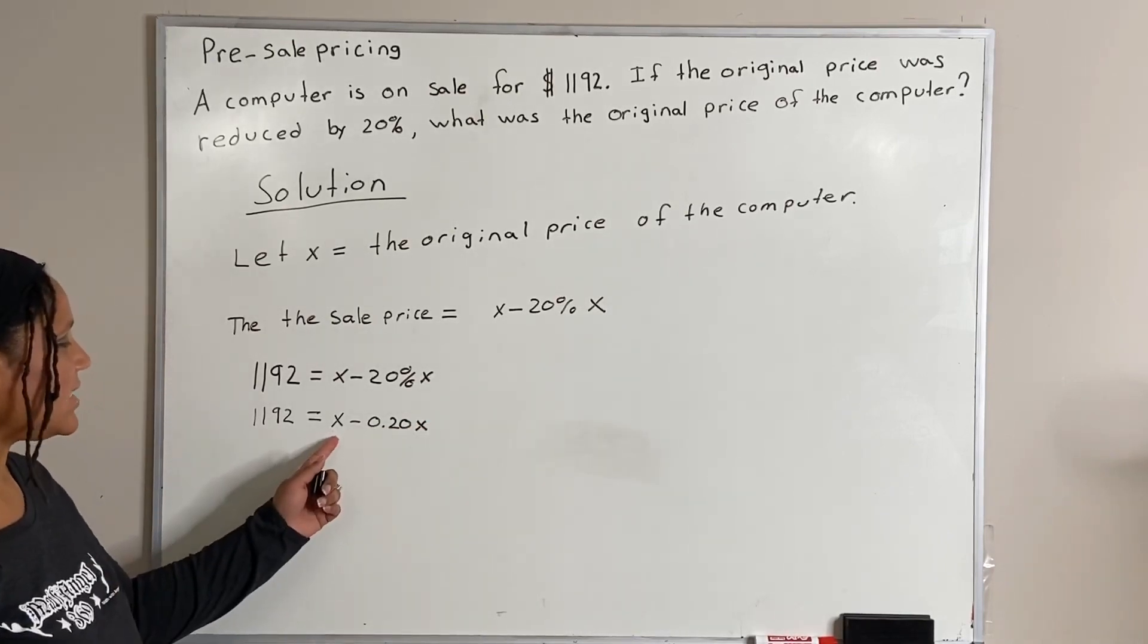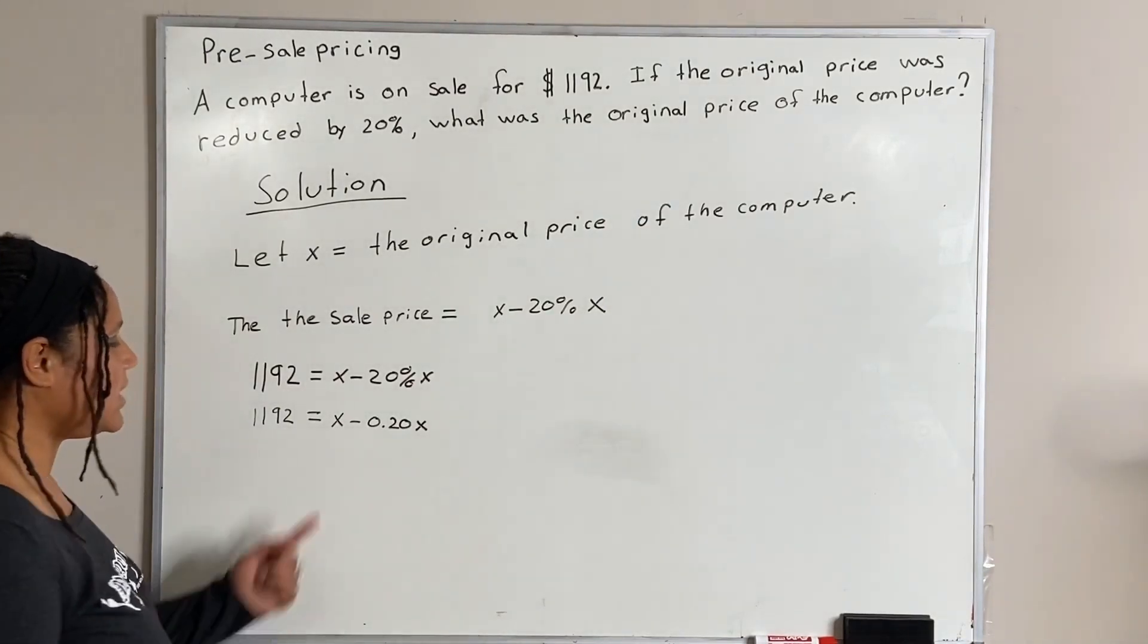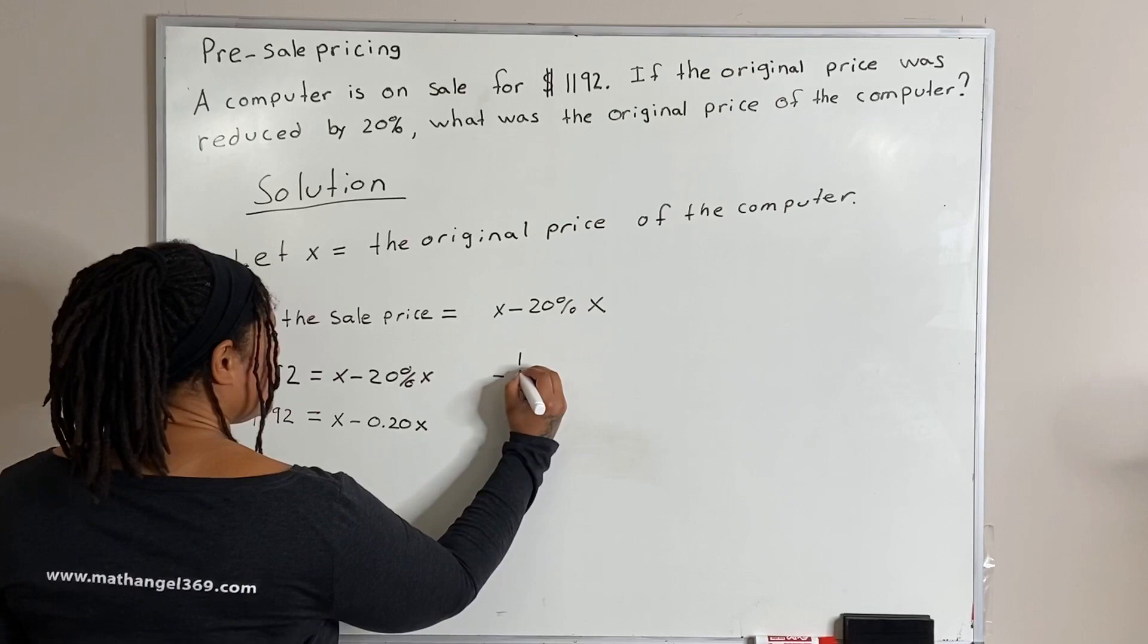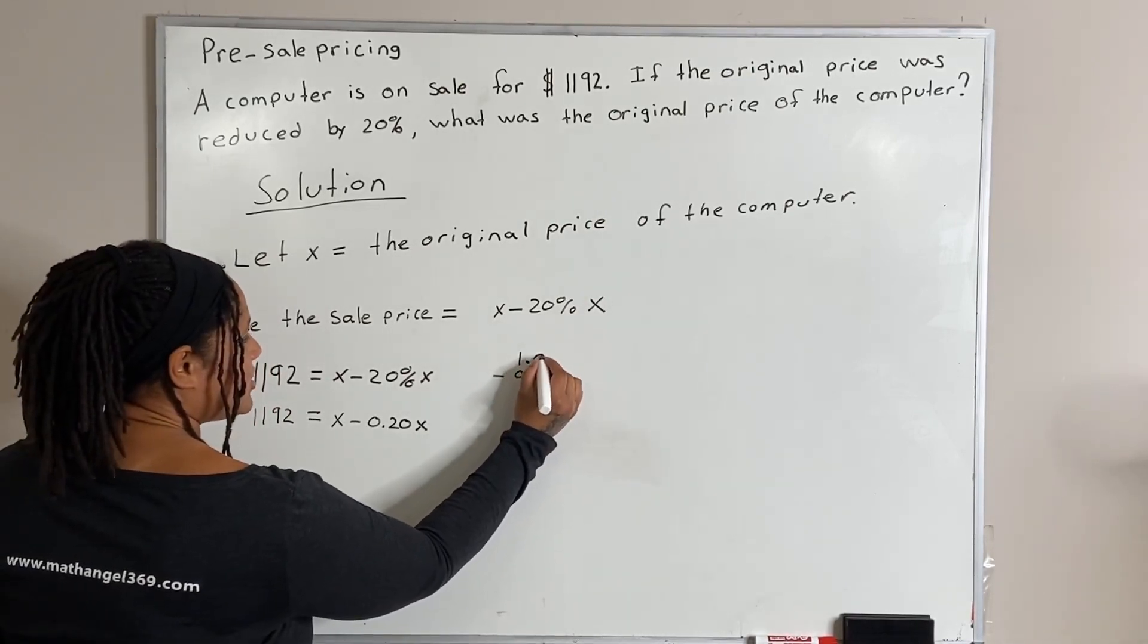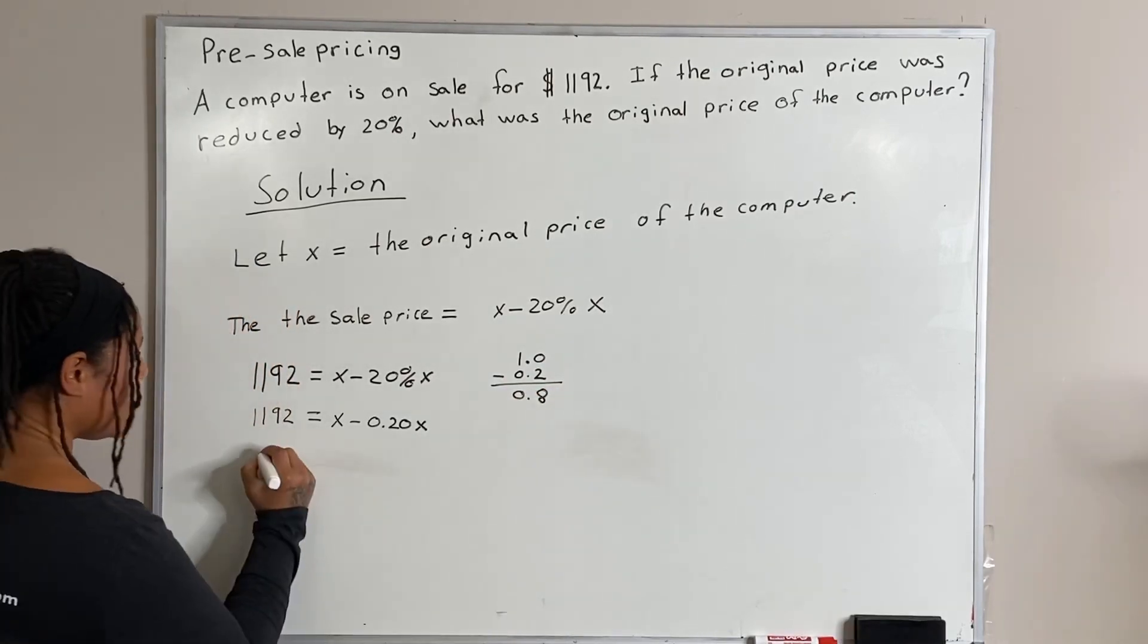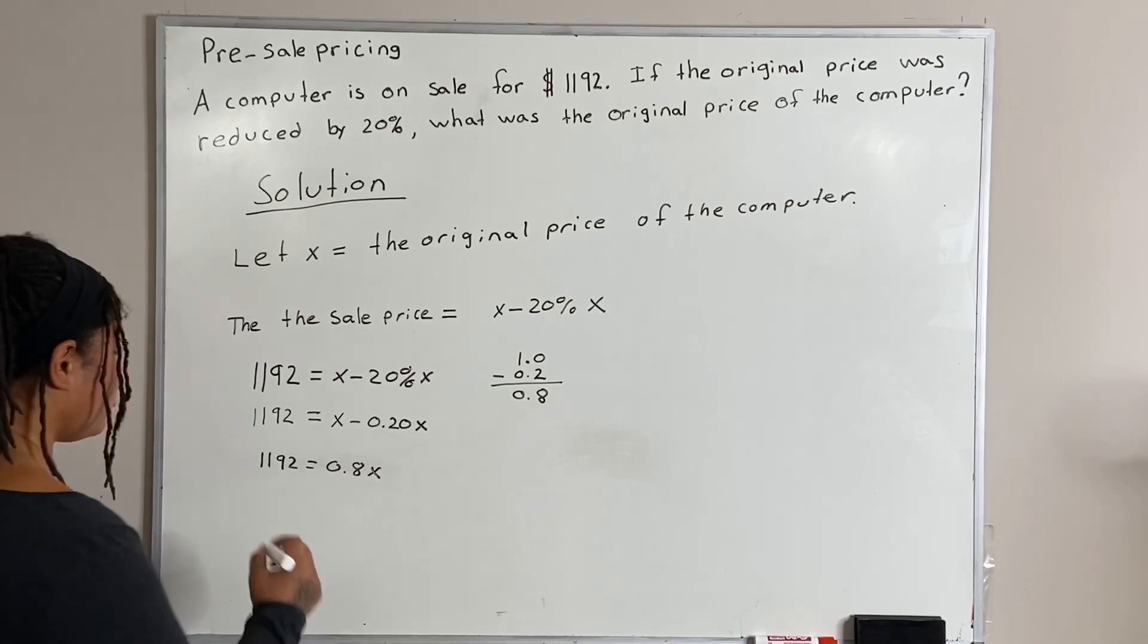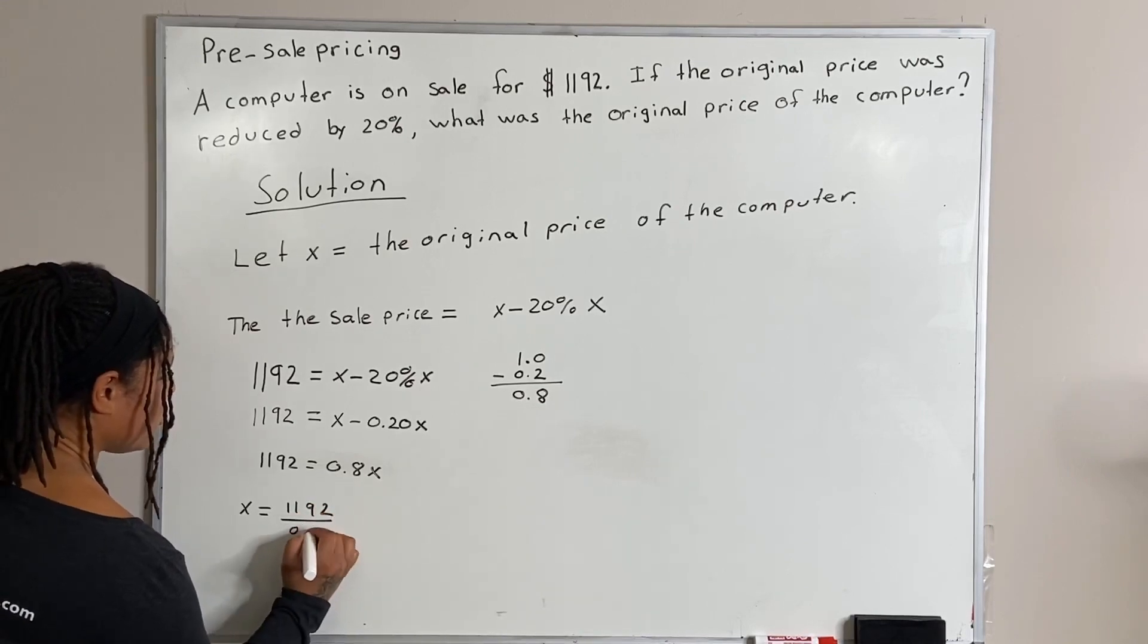And now, we have 1x here minus 0.20x. So, we need to add them together. So, I'm going to come out to the side and say 1 minus 0.20. And I'm going to go ahead and line up my decimal points, which is going to be 0.8. So, we have 1,192 is equal to 0.8x. Now we divide both sides by 0.8. So, x is equal to 1,192 over 0.8.